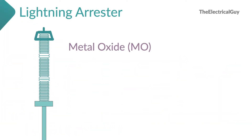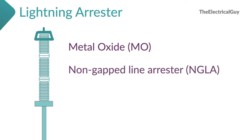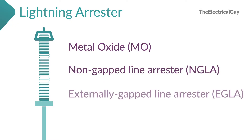For substation applications, metal oxide (MO) surge arrestors without gaps have been state of the art since the late 1980s. For transmission lines, non-gapped line arrestors (NGLA) and externally-gapped line arrestors (EGLA) are used.